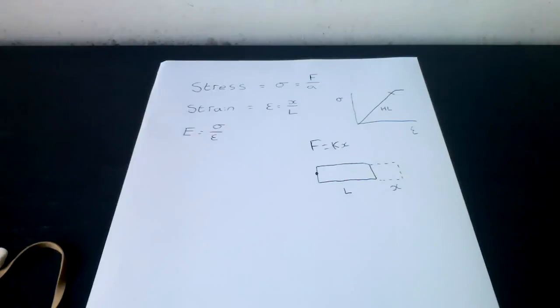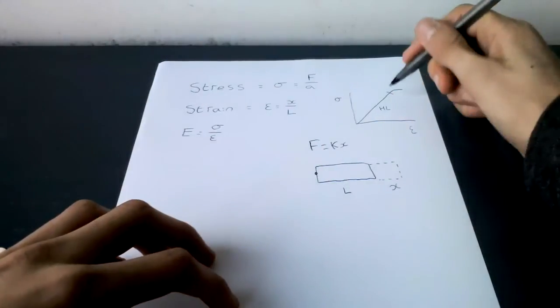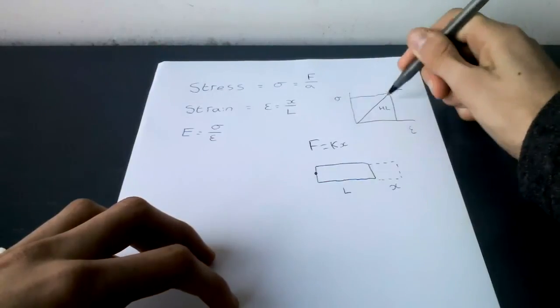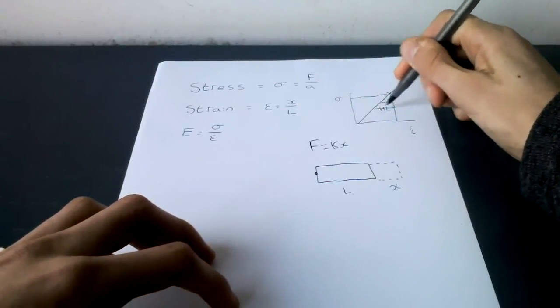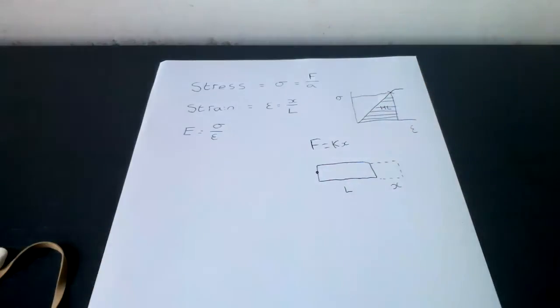So we know Hooke's law. We can now determine how much potential energy an object has when a tensile force is applied. So you are wondering, how do you calculate it on a graph? Well, you basically find the area of a triangle. That's the potential energy obtained.